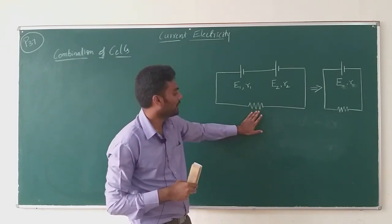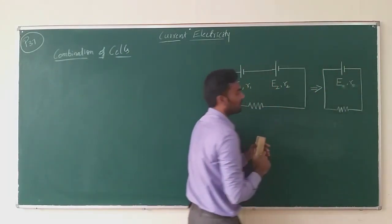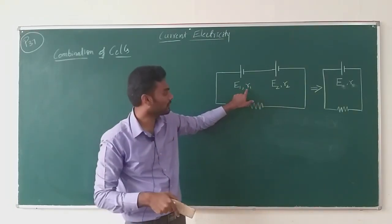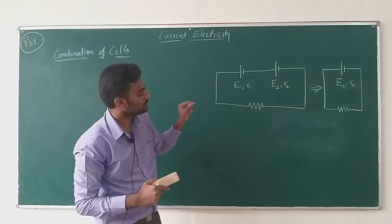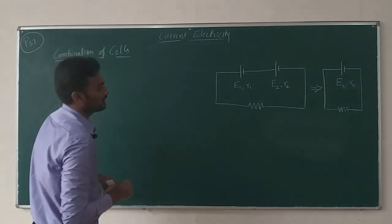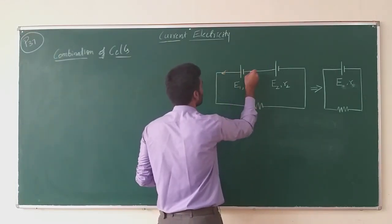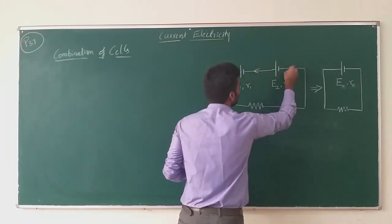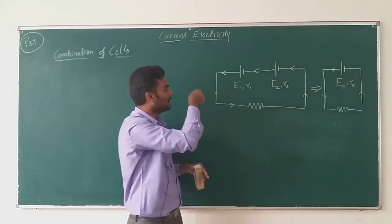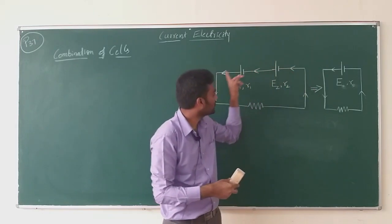Two cells are connected in series: the first with EMF E1 and internal resistance R1, the second with internal resistance R2. Since this is a series circuit, there is no splitting of the circuit, so the current will be constant throughout — whether you take any part of the circuit here, here, or even inside the cell, everywhere the current will be the same value I.